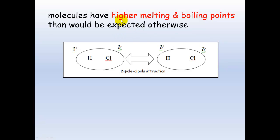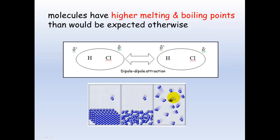Dipole-dipole forces cause molecules to have higher melting and boiling points. In the gas model, molecules are far apart. As they slow down, dipole-dipole attraction takes place, and there is some slight attraction between molecules. In a solid, these attractions are even stronger.